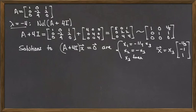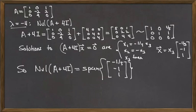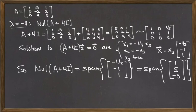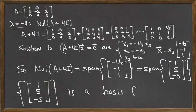So in conclusion, the null space that we're looking for, the eigenspace for lambda equal to minus 4, is the span of the vector that spans the solution set. I'm multiplying everything by minus 5 just to make things look a little bit nicer. And the conclusion is that here is a basis for the eigenspace for lambda equal to minus 4. It is spanned by the single vector 1, 5, minus 5.